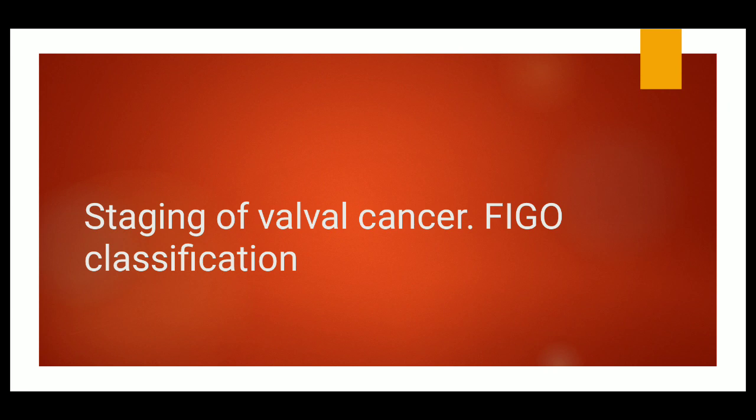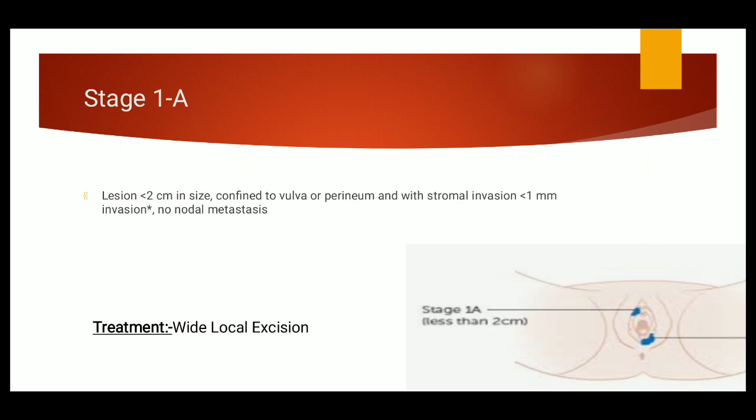Let us discuss Stage 1. Stage 1 is divided into two stages: Stage 1A and Stage 1B. What is Stage 1A? Stage 1A is the condition in which the lesion is less than 2 cm in size, confined to vulva or perineum with stromal invasion of less than 1 mm, and there is no nodal metastasis. As there is no nodal metastasis, the risk of nodal metastasis is very low. So we do wide local excision in such cases. We have to remember lesion of less than 2 cm.